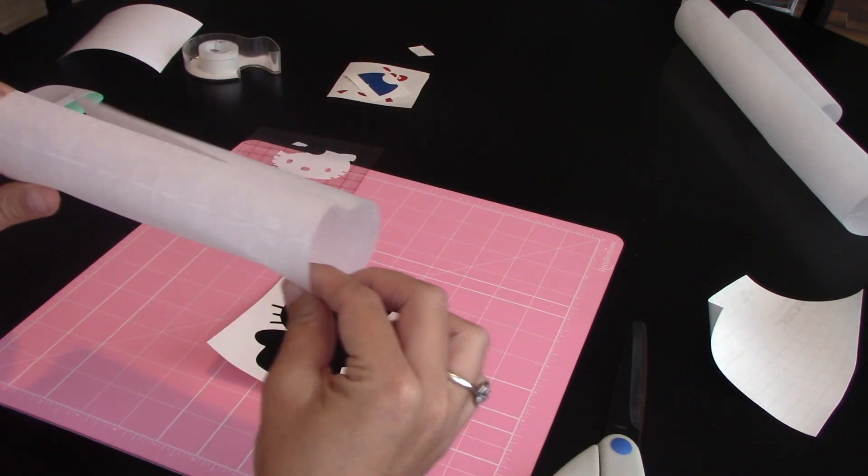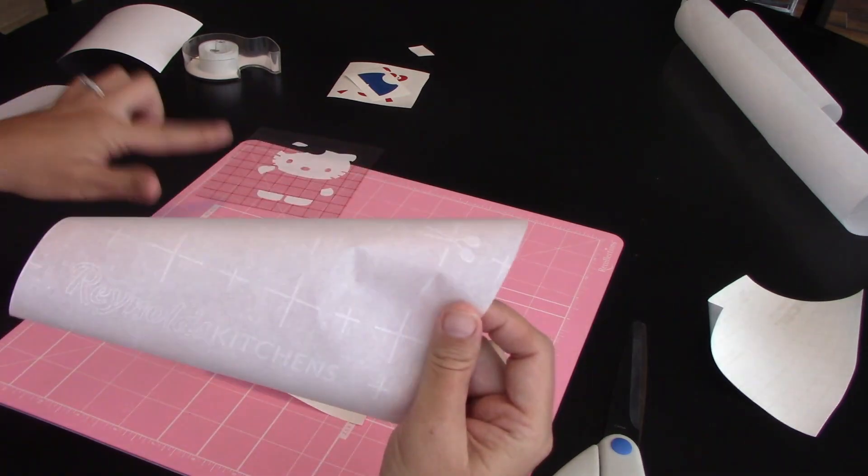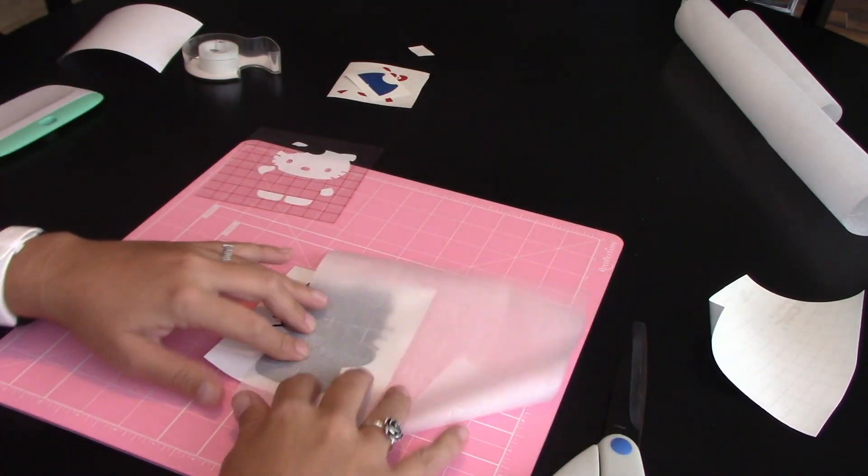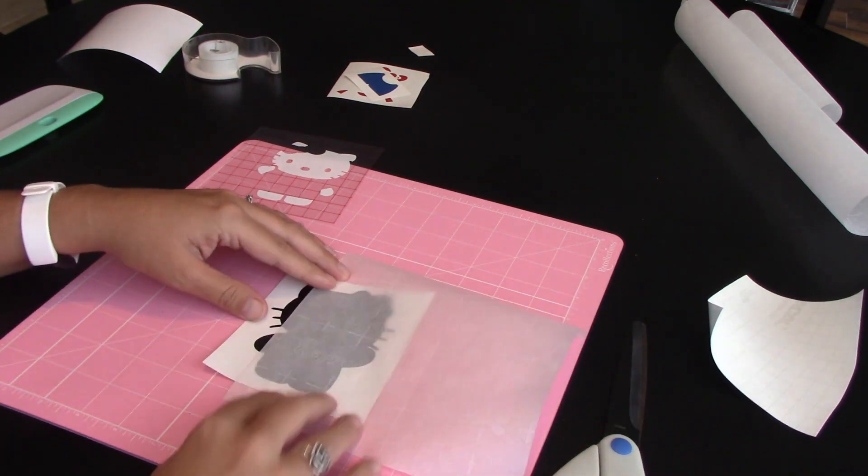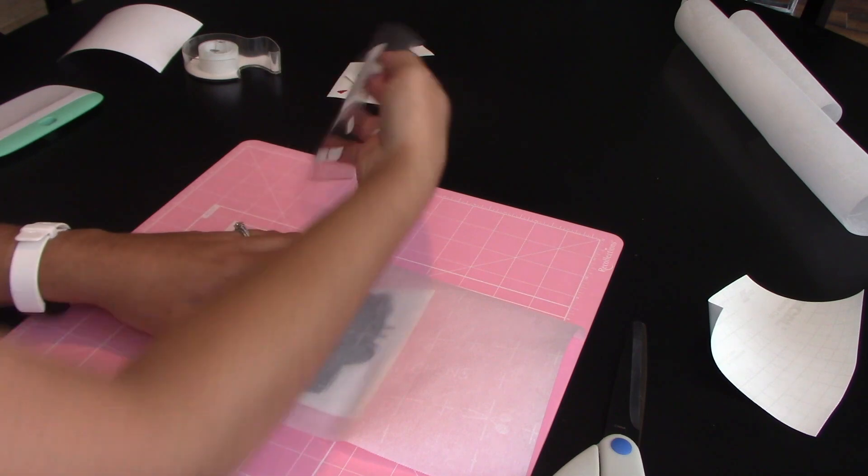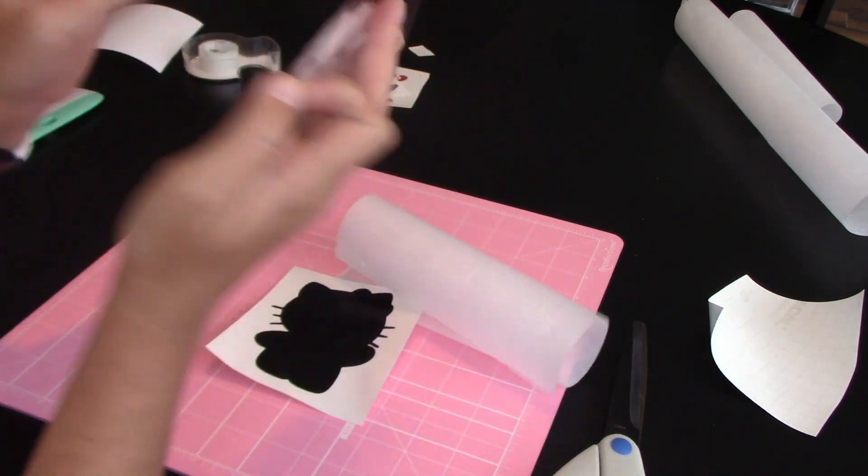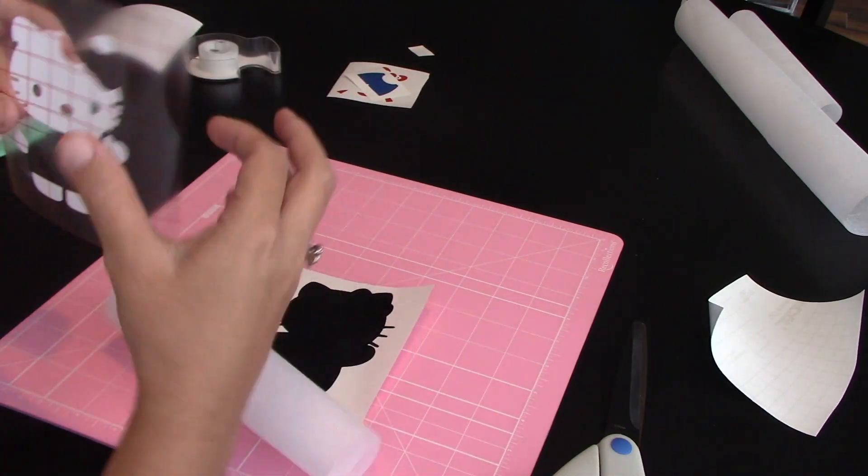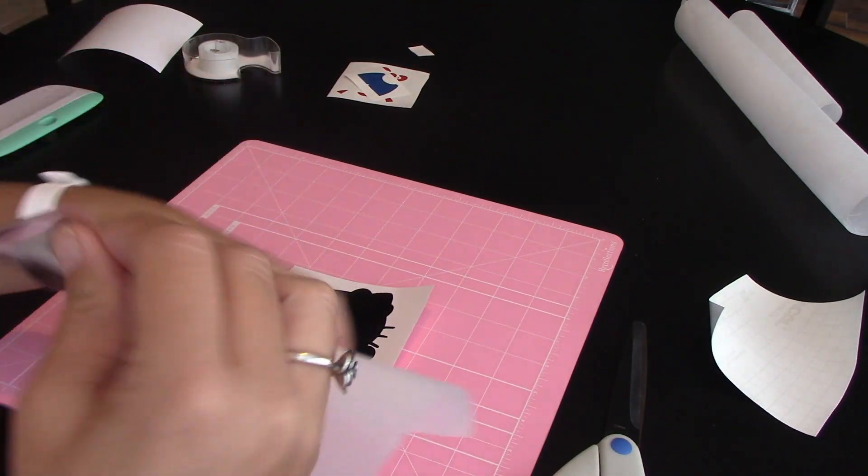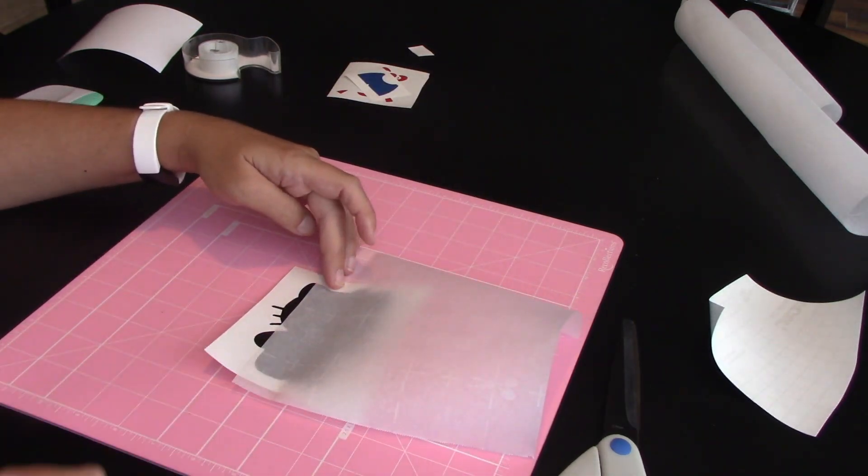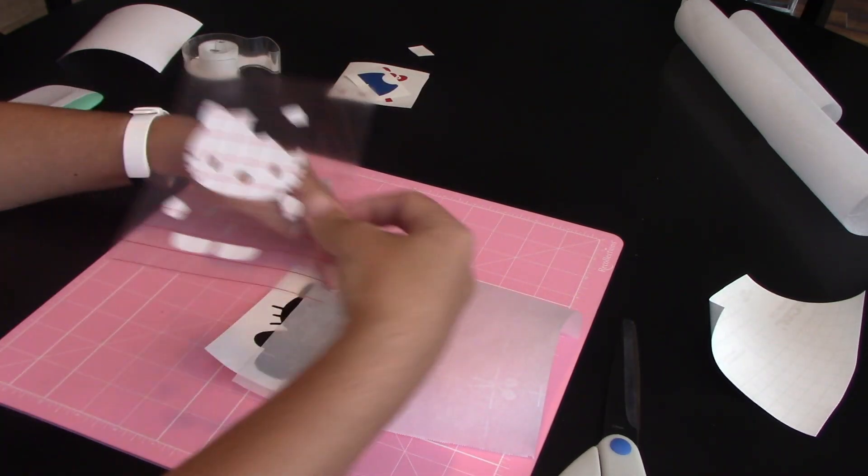So the reason you want this is your vinyl will not stick to the parchment paper, yet I can see through the parchment paper. So what I'm going to do is take my white layer and put it at the edge of my parchment paper where I have just a little bit of my black showing through so that I can line it up on that.